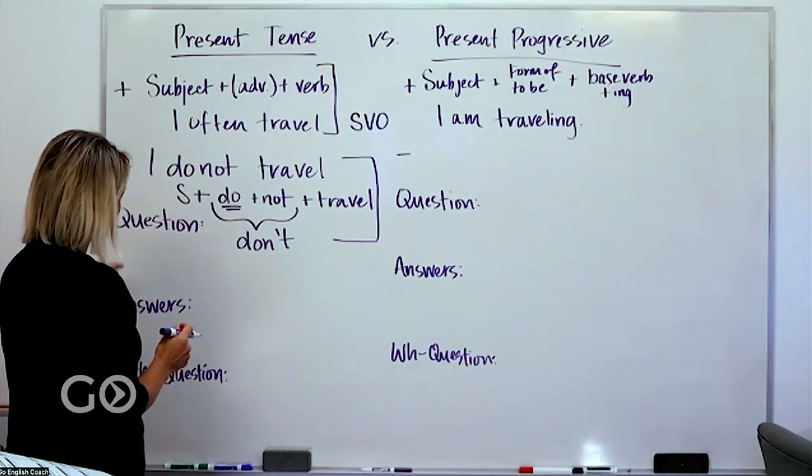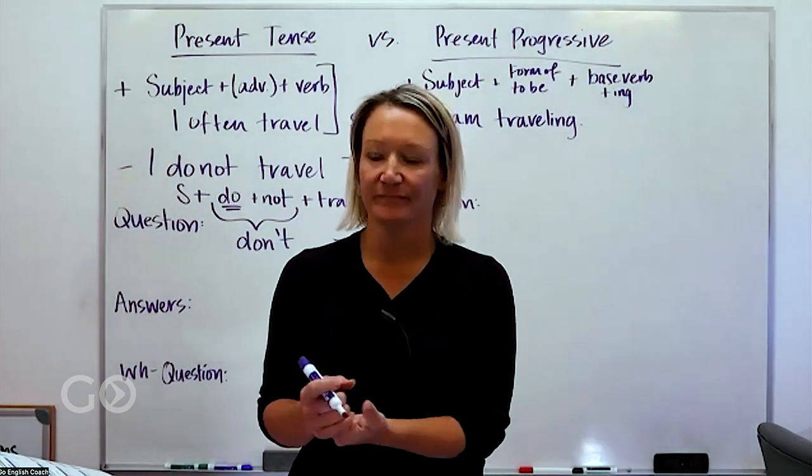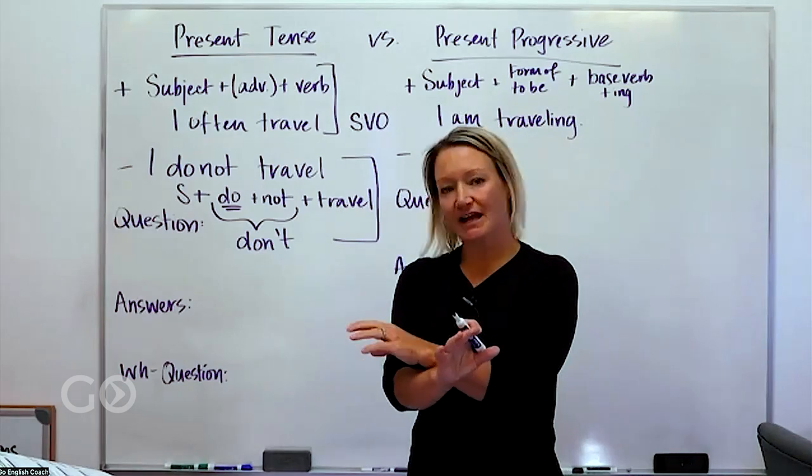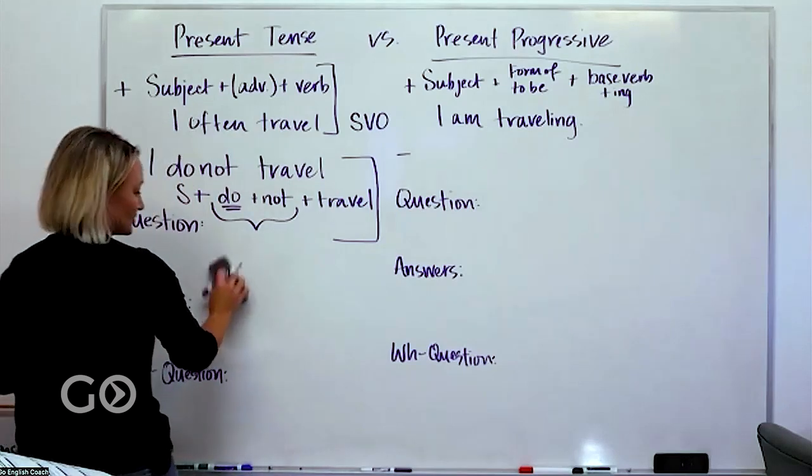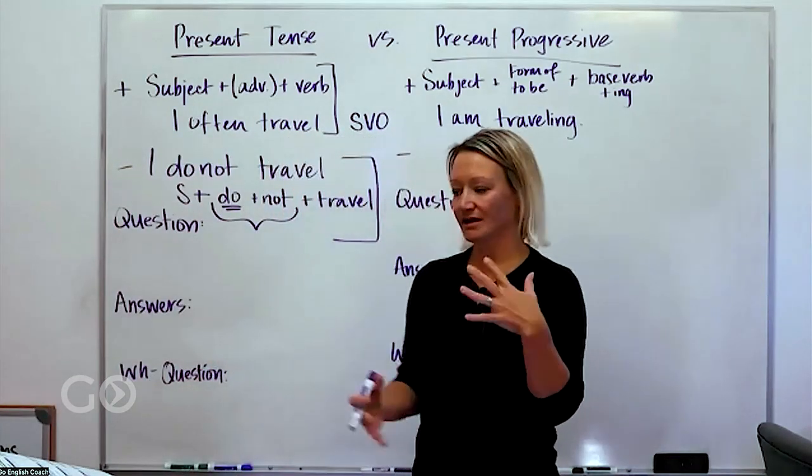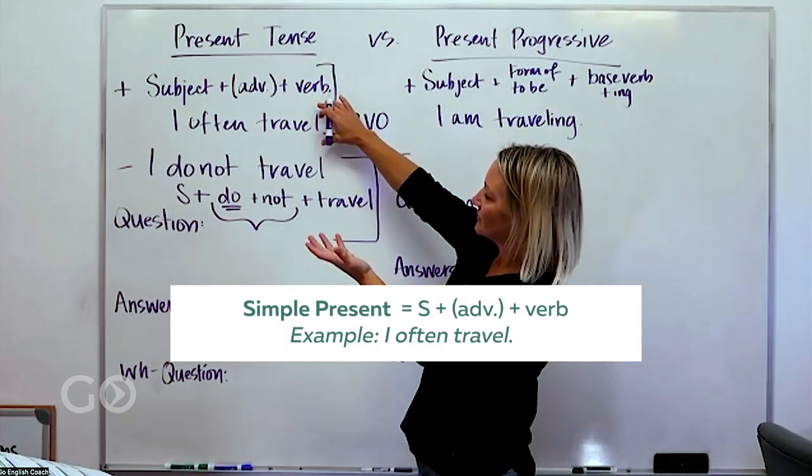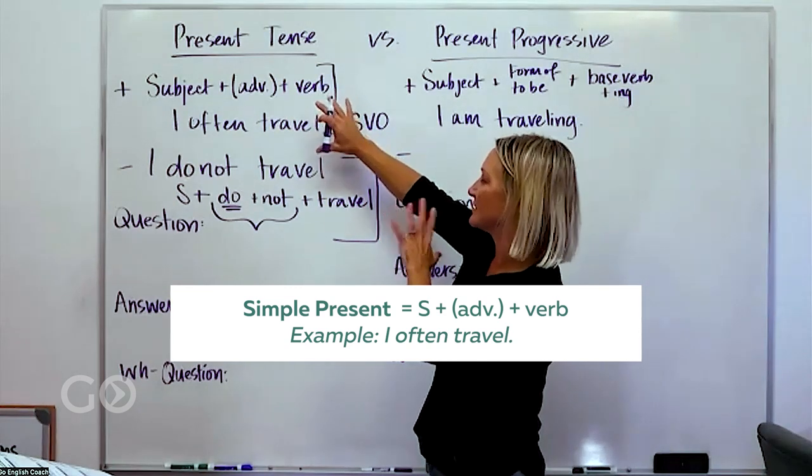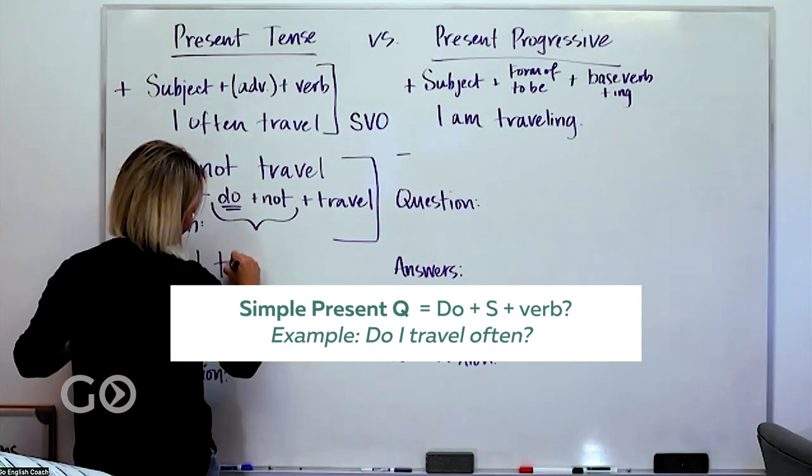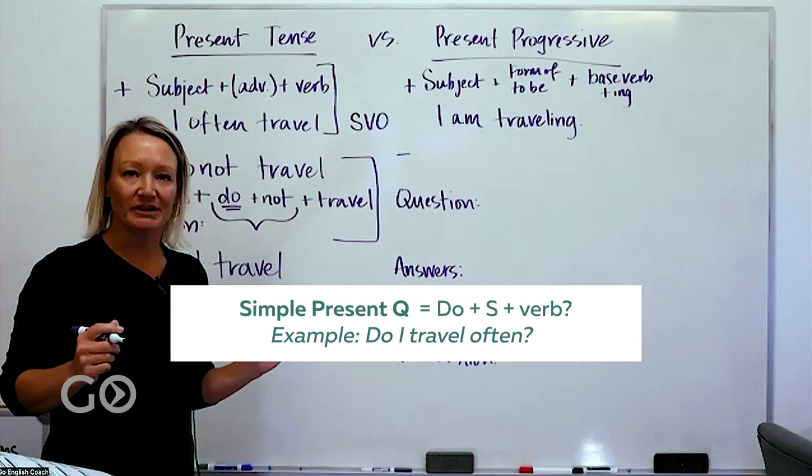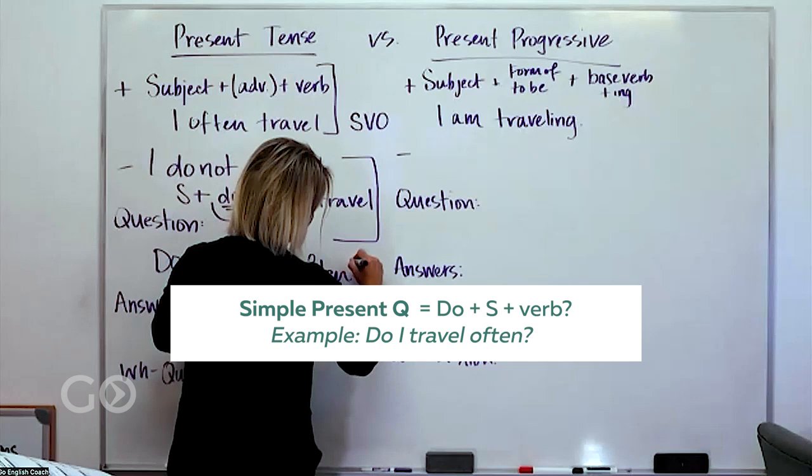In English there are two ways that we identify a question. We change the order and we use a question mark. You guys I'm sure you know this already but let's just do our brief review here so we're all kind of on the same page and then we can build on this in our next class.